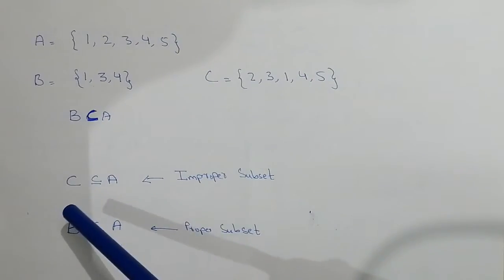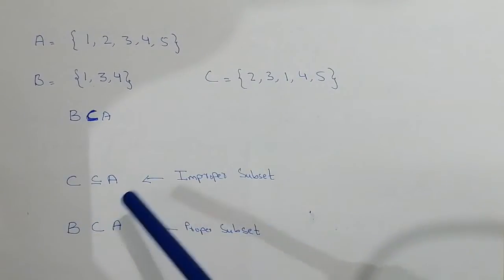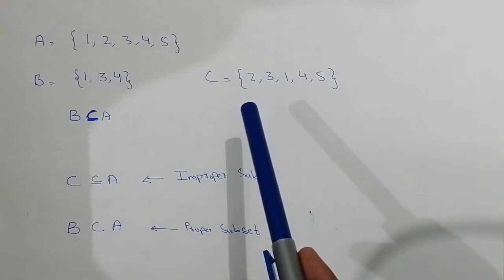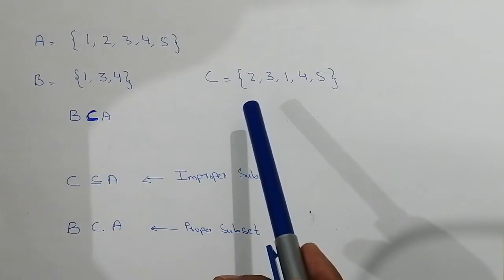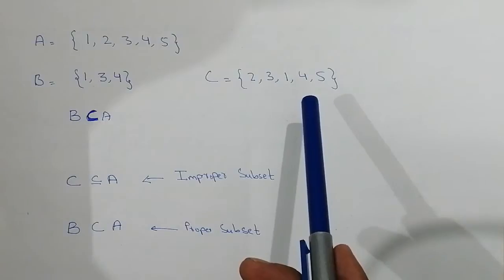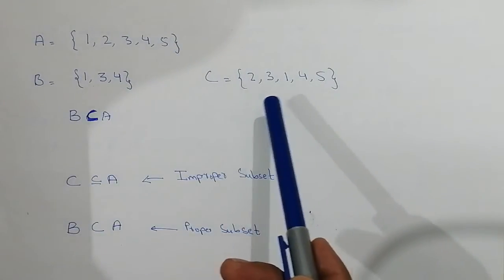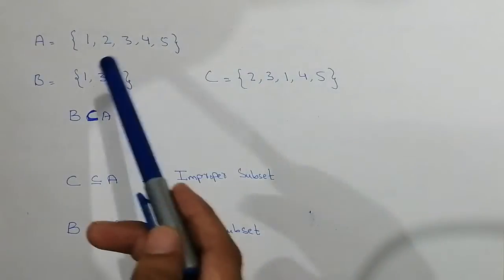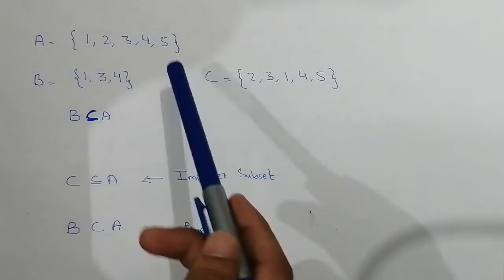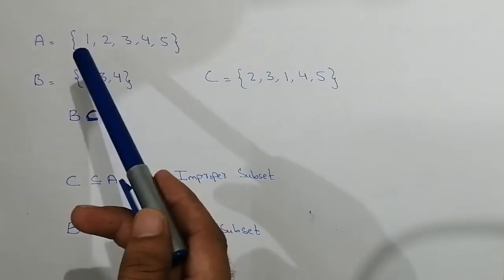We can say that C is the improper subset of set A, because all elements present in set C are also present in set A: 2, 3, 1, 4, and 5. You can see over here that all the elements match. So both the sets are equal.